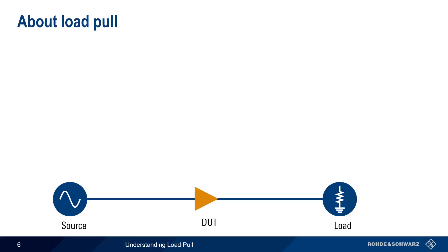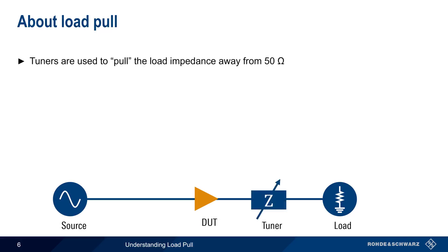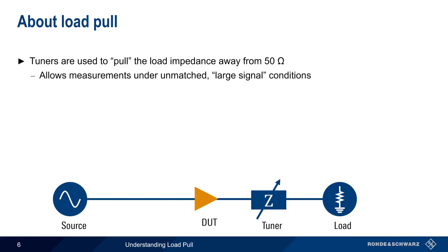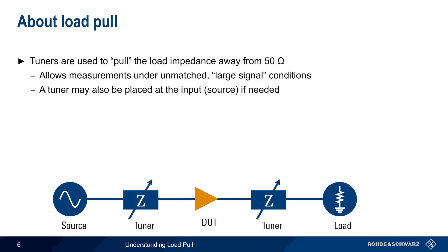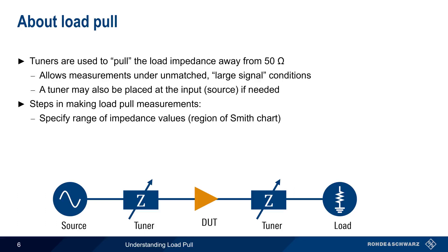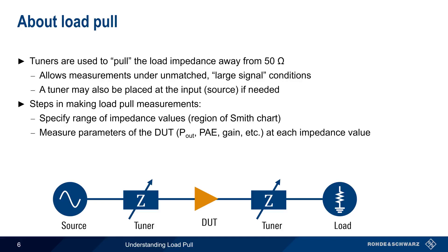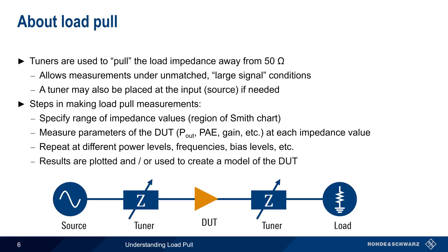These questions can be answered using something called load pull. In load pull, a tuner is placed at the DUT output to pull the load impedance away from the standard 50 ohm load, allowing measurements to be made under unmatched and large signal conditions. In some cases, a tuner may also be placed at the DUT input to ensure a 50 ohm impedance match at the input, or for making so-called source pull measurements. The first step in load pull measurements is specifying a range of impedance values, often defined as a region on the Smith chart. Tuners are then used to change the impedance seen by the DUT and measure parameters of interest such as output power, PAE, gain, etc., sometimes repeated at different power levels, frequencies, and bias levels. The results are then plotted on a Smith chart and used to create a model of the DUT.